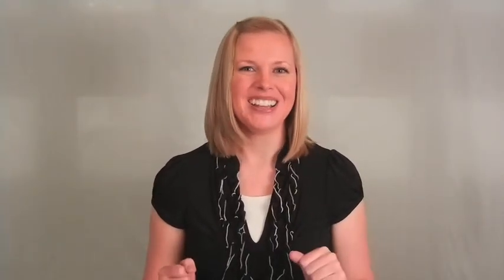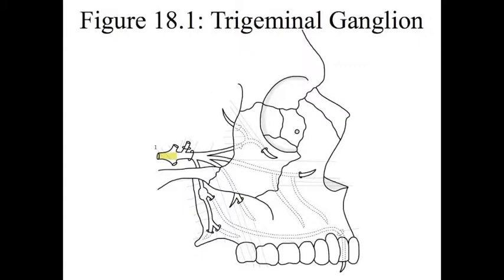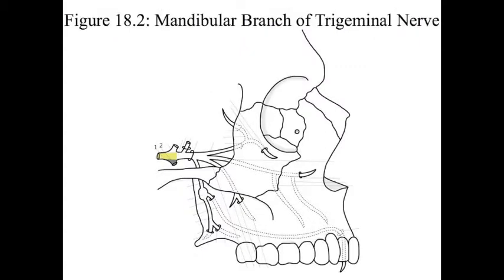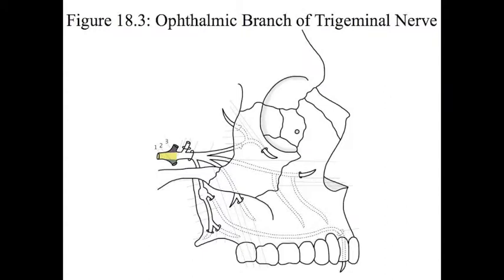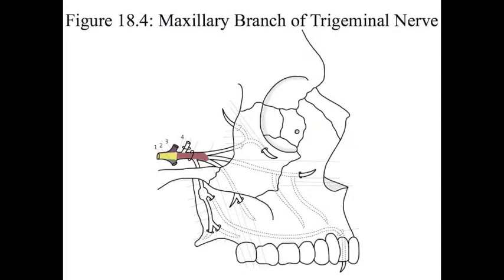Figure 18 is the maxillary branch of the trigeminal nerve. Number 1 is the trigeminal ganglion. Number 2 is the mandibular branch of the trigeminal nerve. Number 3 is the ophthalmic branch of the trigeminal nerve. Number 4 is the maxillary branch of the trigeminal nerve.